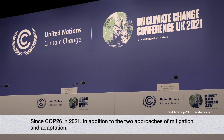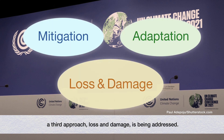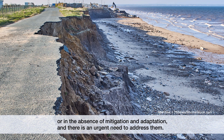Since COP26 in 2021, in addition to the two approaches of mitigation and adaptation, a third approach — loss and damage — is being addressed. Loss and damage can generally be understood as the negative impacts of climate change that occur despite or in the absence of mitigation and adaptation, and there is an urgent need to address them.